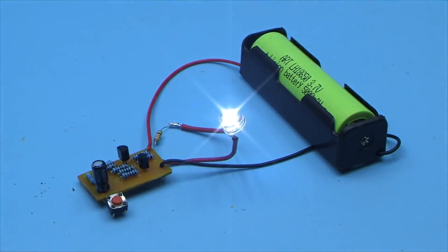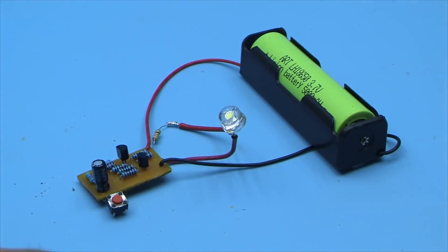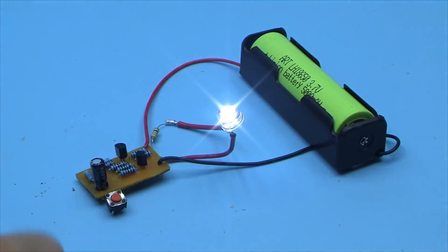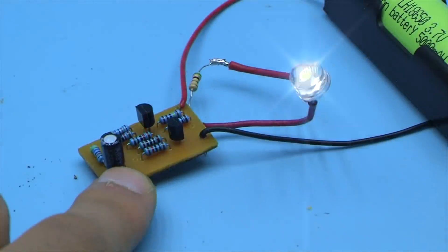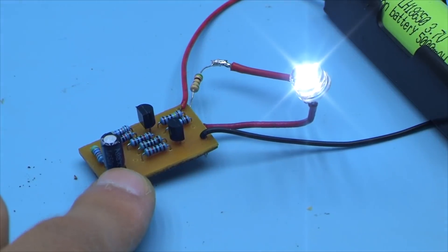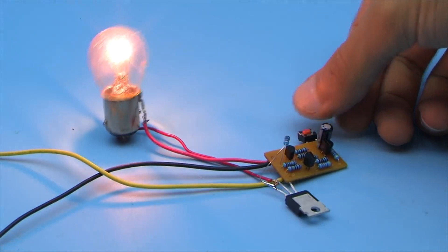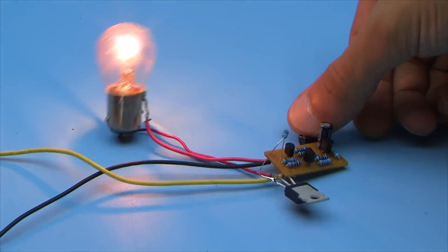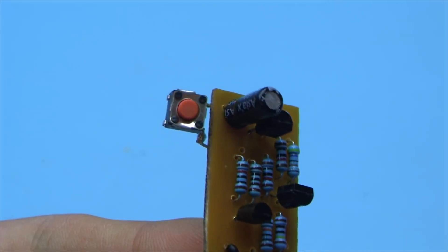The circuit works according to the following principle. Pressed, the LED will light up, but it will go out only if you press the button next time. Applications of such a simple electronic button are very many, from simple flashlights to powerful switching systems. The button is the most common, without fixation.